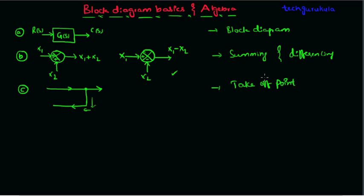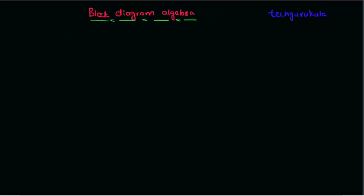These are the basic building blocks to draw a block diagram for a system. A basic block diagram represents the transfer function of the system inside a box, with input signal R(s) and output signal C(s). These are the basic building blocks or components in drawing a block diagram of a system. Now we will see block diagram algebra, or the rules of block diagrams.